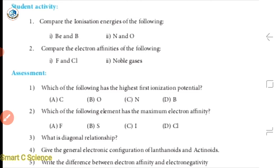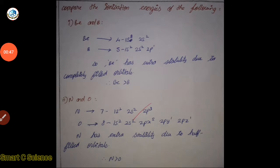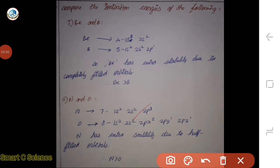Ionization energy: Be has extra stability due to the completely filled orbitals. B, Be — Be has extra stability due to the completely filled orbitals. These elements already have completely filled subshells, giving them extra stability.